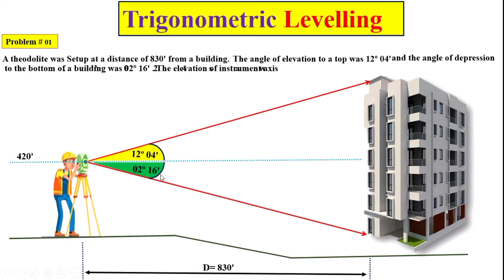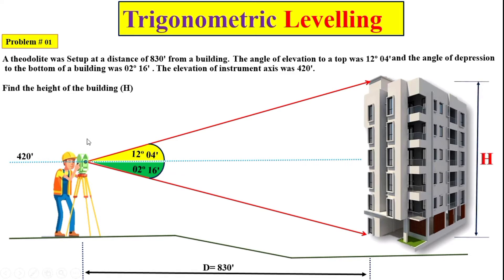The elevation of the instrument axis is 420 feet. The required data: we have to find the total height of the building, represented by capital H, and also to find the reduced level of the top of the building. This data is sufficient for calculating the reduced level and total height of the building.